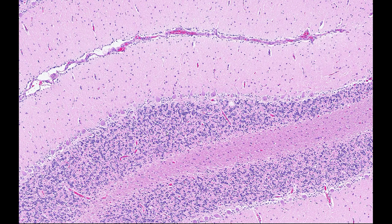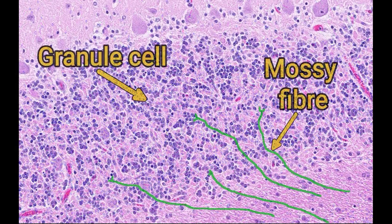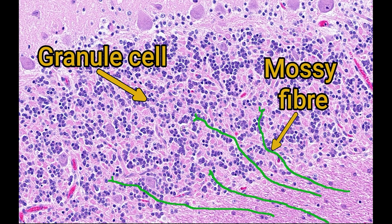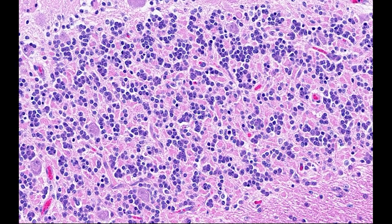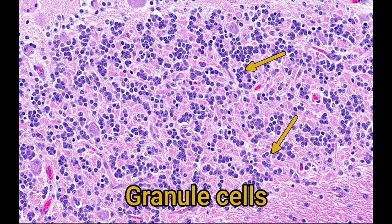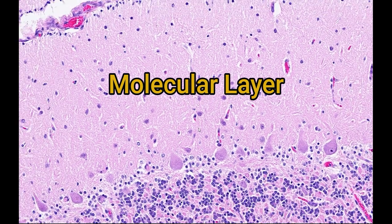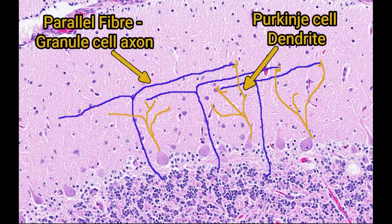The mossy fibres synapse with granule cells in the granular layer. Most cell nuclei that you can see in the granular layer belong to granule cells. These are the smallest and most numerous neurons in the brain, so all of these dark little nuclei with little cytoplasm belong to granule cells. These granule cells then send axons up through the Purkinje cell layer to the molecular layer, where they synapse with dendrites from the Purkinje cells. These axons are known as parallel fibres because they often head up into the molecular layer and then branch out parallel to the layered structure of the cortex.